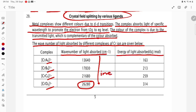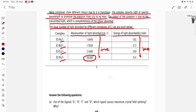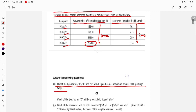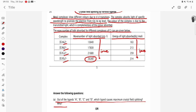So what are the questions here? Answer the following: Out of the ligands A, B, C, D, which ligand causes maximum crystal field splitting, the maximum wave number, or the maximum energy, maximum splitting?